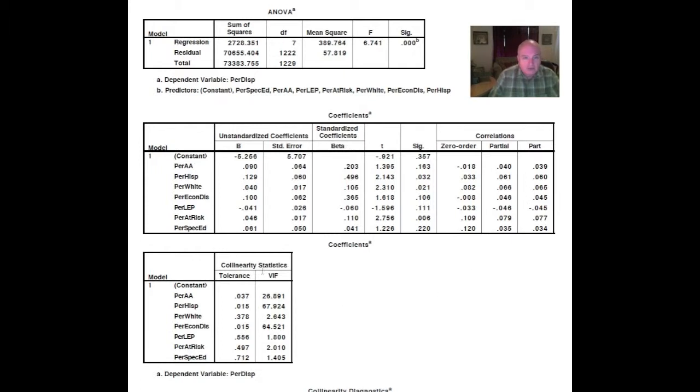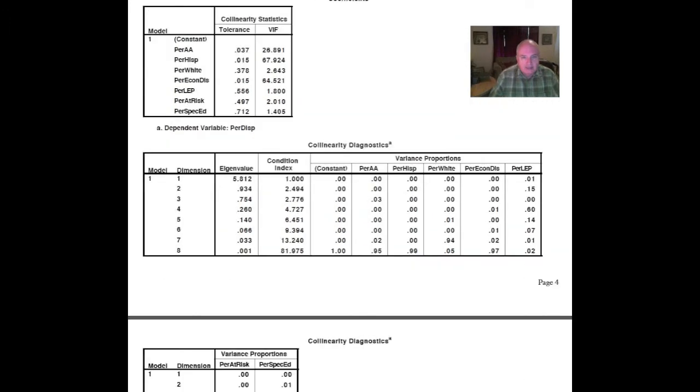The collinearity statistics should run between 0.1 on down. It should be greater than that. In fact, some of those, that percent economically disadvantaged and the percent of Hispanic are very closely correlated. That's really interesting, isn't it?